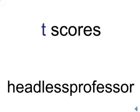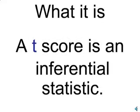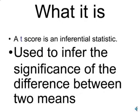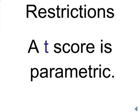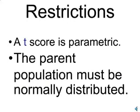This video is about t-scores. A t-score is an inferential statistic used to infer the significance of the difference between two means. Like many other statistics discussed in this course, a t-score is parametric, which means it assumes that the population from which the sample is drawn must be normally distributed.